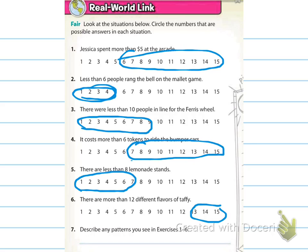Number 7 says describe any patterns that you see in exercises 1 through 6. One pattern I see is that the number mentioned in the statement is never part of the circled answers, because it's either more than or less than that number — not including it. None of the answers for 1 through 6 include the number mentioned in the statement.